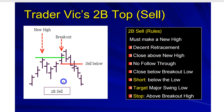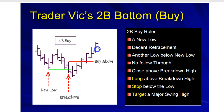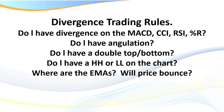Going back 29 years ago, computers weren't used like they are now, but we're talking about exactly the same thing — except we also want to see an oscillator working in our favor. Here we've got a higher high on price and we'd like to see a lower high on our oscillator. If we were going long, we've got a lower low on price and a higher low on our oscillator.